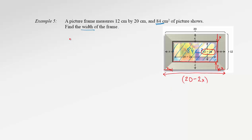Good. Now we're ready to write the equation for area of inner rectangle. That will be length times width equals 84 centimeters. Instead of length, we have expression 20 minus 2x. Instead of width, we have expression 12 minus 2x. Everything equals to 84.